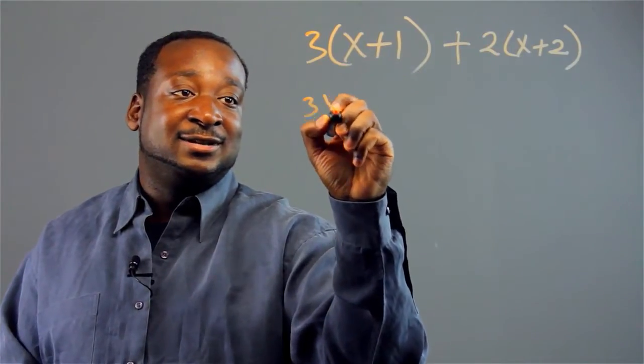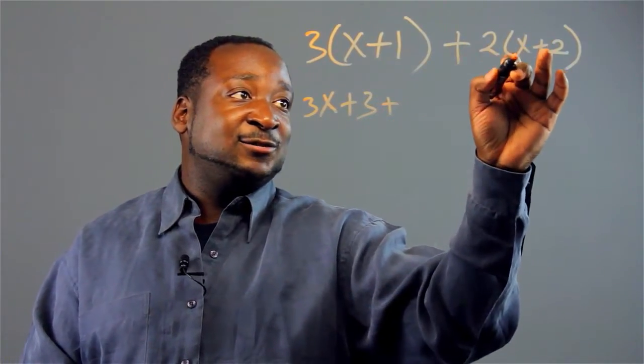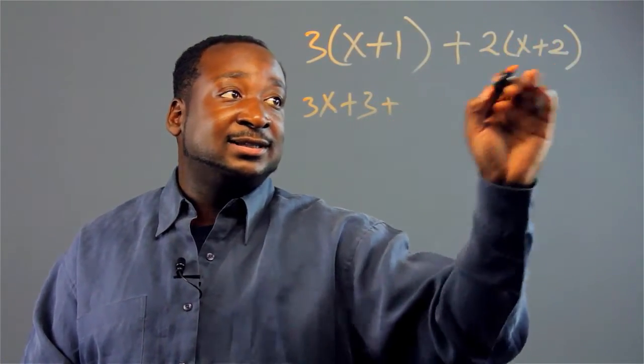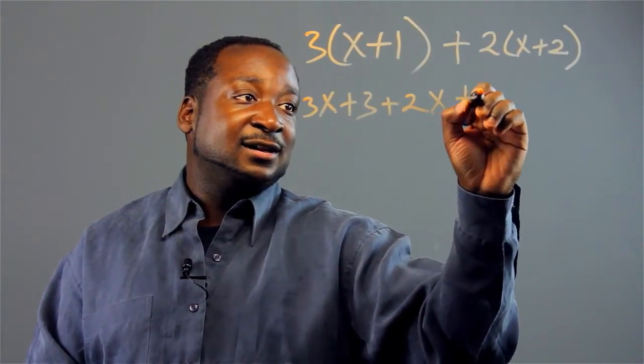In this case, you're getting 3x plus 3 plus distributing the 2. On this side, I get 2x plus 4.